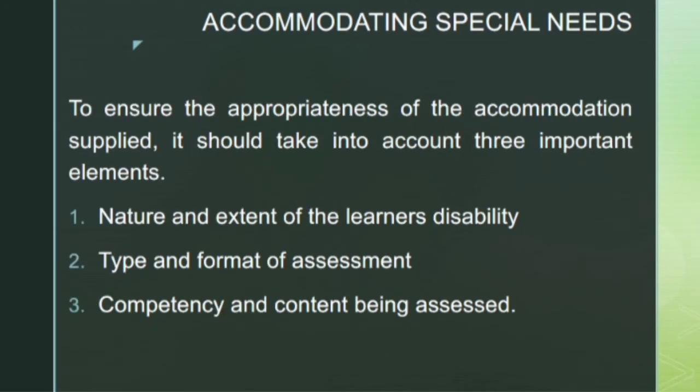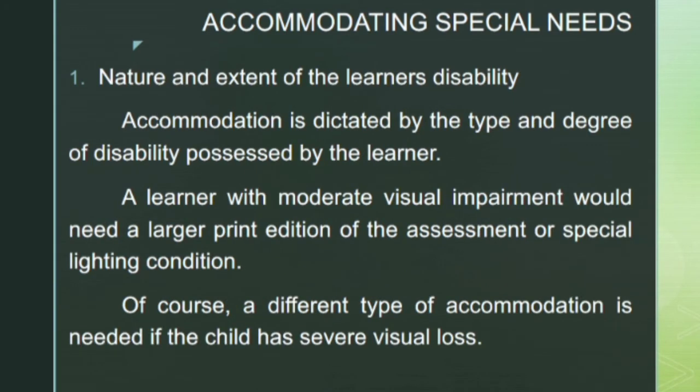Number one: nature and extent of the learner's disability — accommodation is dictated by the type and degree of disability possessed by the learner. A learner with moderate visual impairment would need a larger print edition of the assessment or special lighting conditions. A different type of accommodation is needed if the child has severe visual loss.